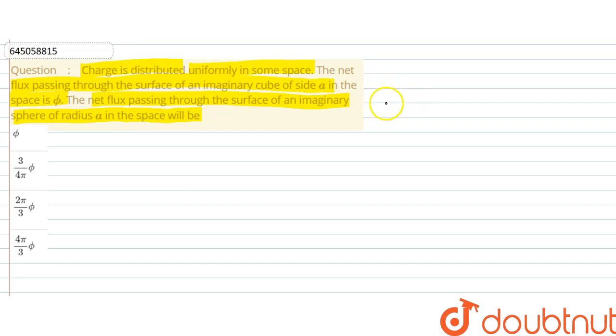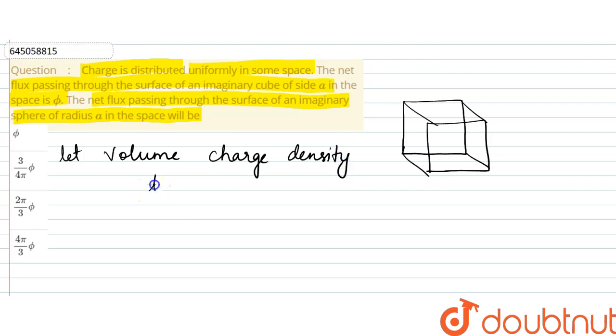So, since initially we are assuming that it is a cube, so let this be cube here. Let the volume charge density be rho. And it has side A, so volume would be equal to A cube.